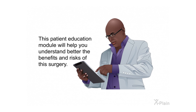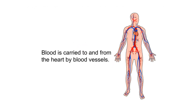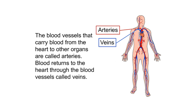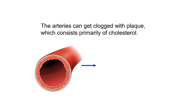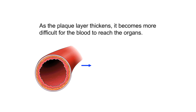Anatomy. Blood is carried to and from the heart by blood vessels. The blood vessels that carry blood from the heart to other organs are called arteries; blood returns to the heart through vessels called veins. A normal artery has smooth walls, as are common in children and young adults. The arteries can get clogged with plaque, which consists primarily of cholesterol. As the plaque layer thickens, it becomes more difficult for blood to reach the organs.